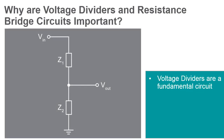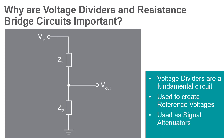Voltage dividers are one of the most fundamental circuits in electronics. Resistor voltage dividers are frequently used to create reference voltages or to reduce the magnitude of a voltage so it can be measured. They're also useful as signal attenuators at low frequencies.